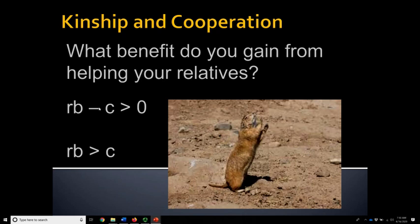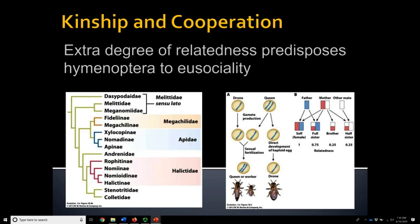Because of the elevated degree of relatedness between sisters, it's very common for mutations that allow for altruistic behavior and eventually lead to altruism to be kept. It's more likely that if an individual gives up some or all of their reproductive ability to help a relative, that will overall be a good thing. So that high degree of relatedness predisposes the hymenoptera — ants, bees, and wasps — to evolving eusociality.